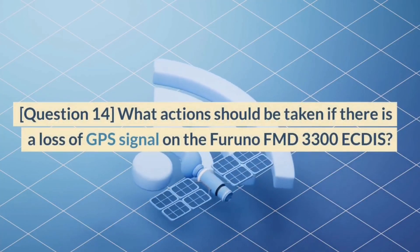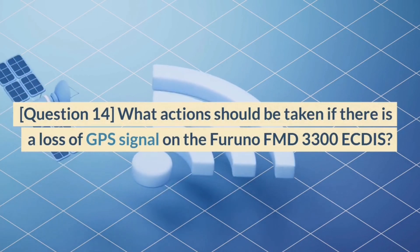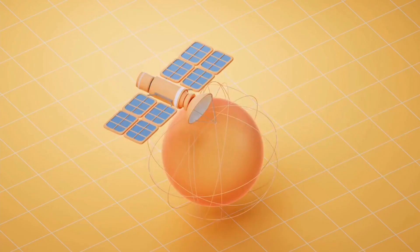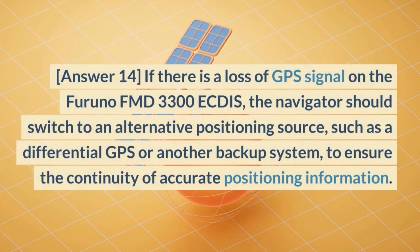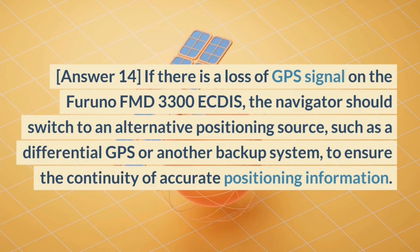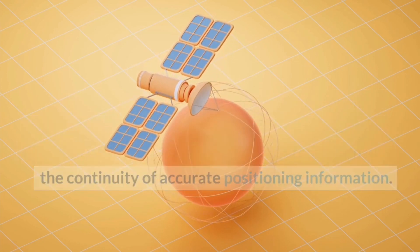Question 14. What action should be taken if there is a loss of GPS signal on the Furuno FMD 3300 ECDIS? Answer 14. If there is a loss of GPS signal, the navigator should switch to an alternative positioning source, such as a differential GPS or another backup system, to ensure the continuity of accurate positioning information.